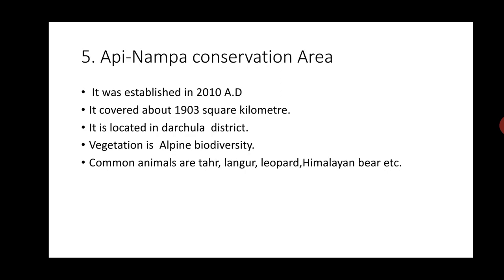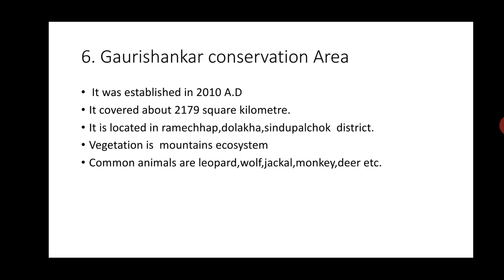Number four: Apinampa Conservation Area. It was established in 2010 AD. It covers about 1,903 square kilometers. It is located in Darchula district. Vegetation is alpine biodiversity. Common animals are thar, snow leopard, leopard, and Himalayan bear.